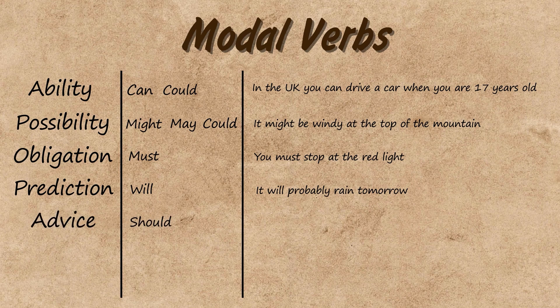So we can say I can run fast but we can't say I can to run fast. The third important rule to remember is that when we make the negative we use not after the verb. So we can say you should not stay up late looking at your phone, but we can't say you don't should stay up late looking at your phone.